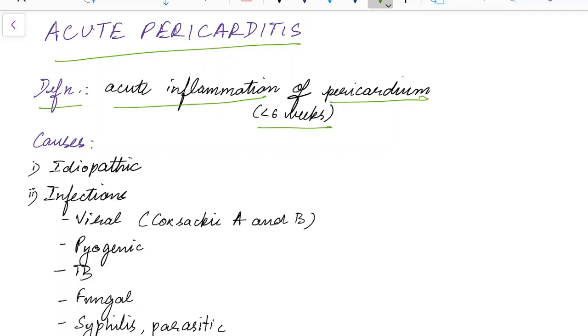Let us see about the various causes of acute pericarditis. Acute pericarditis can be idiopathic. It can be caused due to infections. The common viruses that can cause acute pericarditis are Coxsackie A and Coxsackie B viruses. Acute pericarditis can be caused due to pyogenic organisms, TB, fungal infections, syphilis, and parasitic infections.